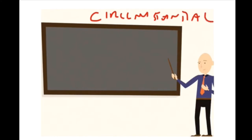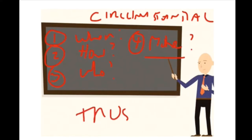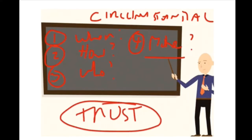Looking at circumstantial guarantees, what we're actually looking at is things like: can we trust the witness? When was the statement made? How was it made and in what circumstances? Who was it made to? Does the person have a motive to lie? There are six or seven different factors — the list isn't closed. You're effectively looking at all the things that might make you trust the evidence, because you can't cross-examine on it. That's the bane of the hearsay rule — the reason why we have it.